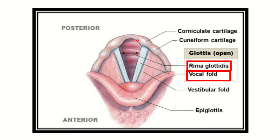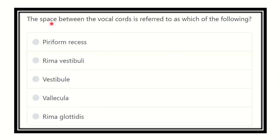Welcome to another question and answer session. The space between the vocal cords is referred to as which of the following? The options are: pyriform fossa, rima vestibuli, vestibule, vallecular, and rima glottis. We have to find out which one of these options is the space located between the vocal cords.